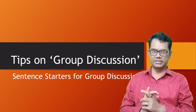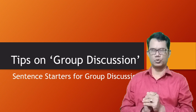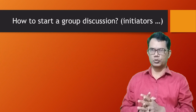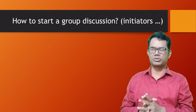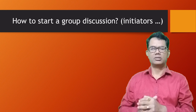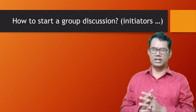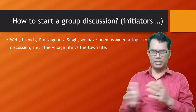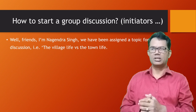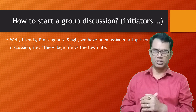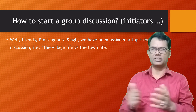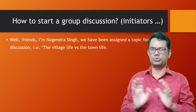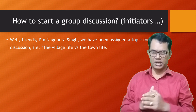Our headline is how to start a group discussion — we are going to talk about initiatives. You may be given a group of four, five, maybe seven or eight students and be asked to do a discussion on a topic. Let's take an example: we have taken the topic of village life versus town life. If you are given the topic and you have to break the ice and start talking.